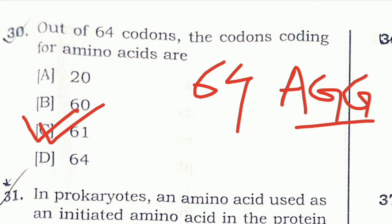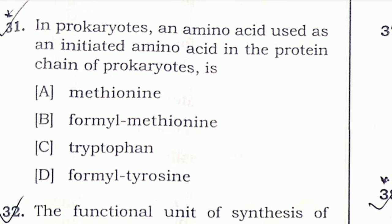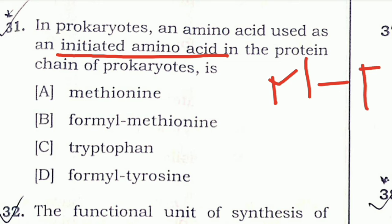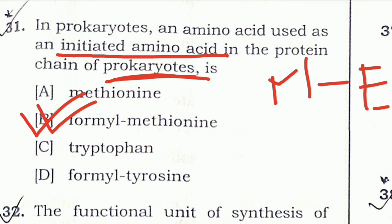If you want to know more about codons and the amino acid relationship, comment below — I will make a video on this concept too. Question 31: In prokaryotes, the amino acid used as an initiator amino acid in the protein chain is — methionine is the initiator in eukaryotes, but in prokaryotes it is formyl methionine. So the right answer is option B.